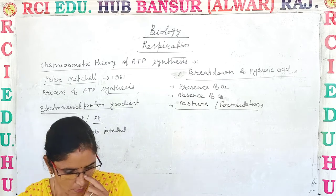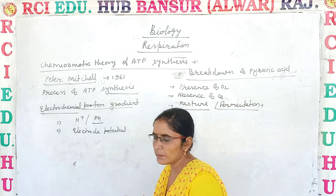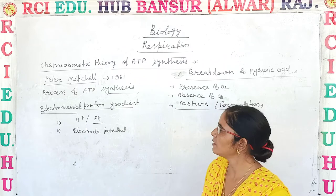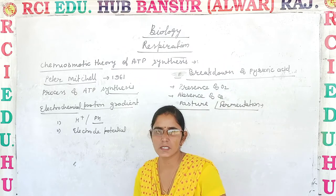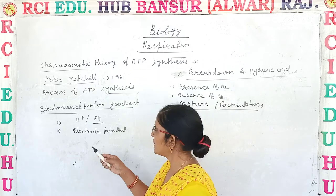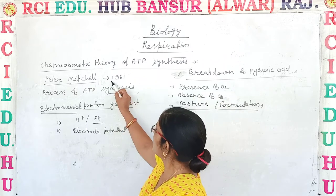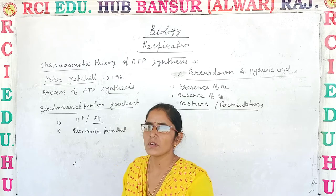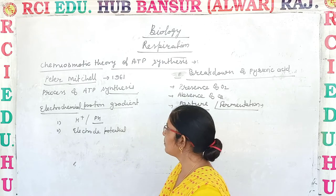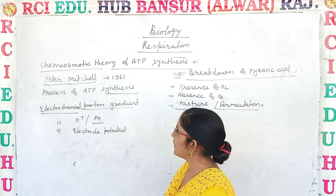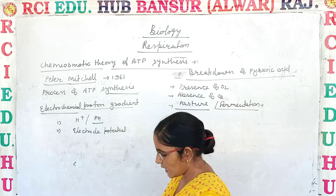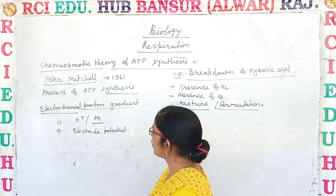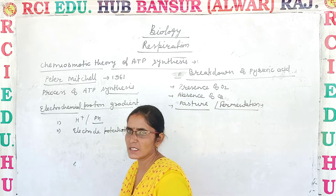This theory was given by Peter Mitchell in 1961. Peter Mitchell gave the theory of chemo-osmotic ATP synthesis. He explained the process of ATP synthesis.